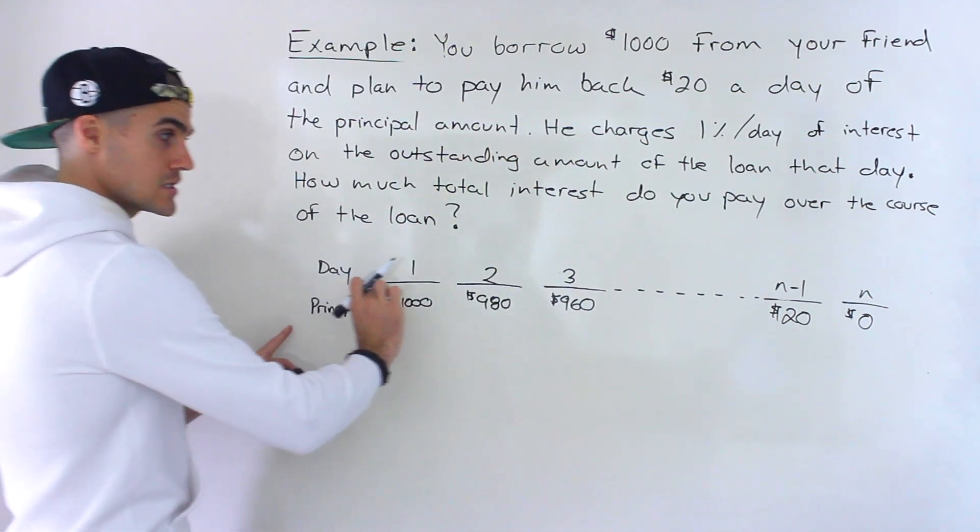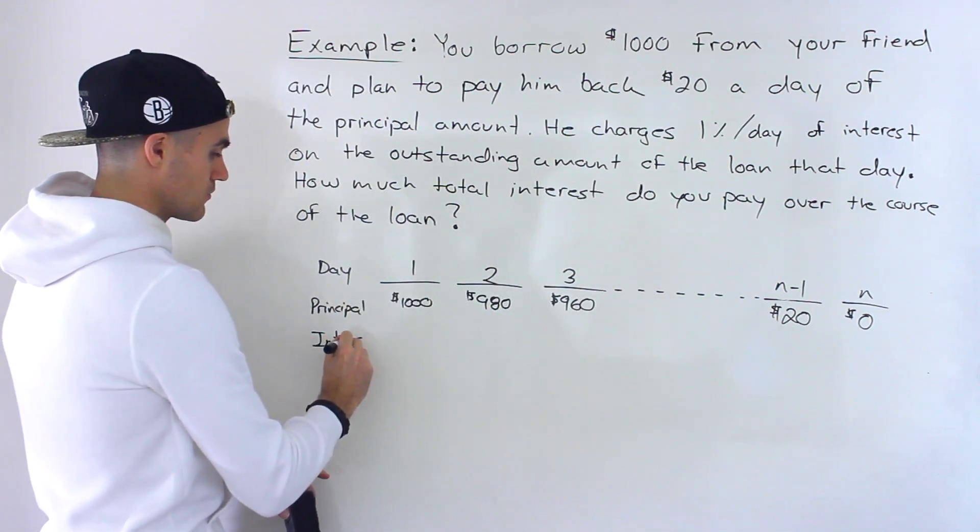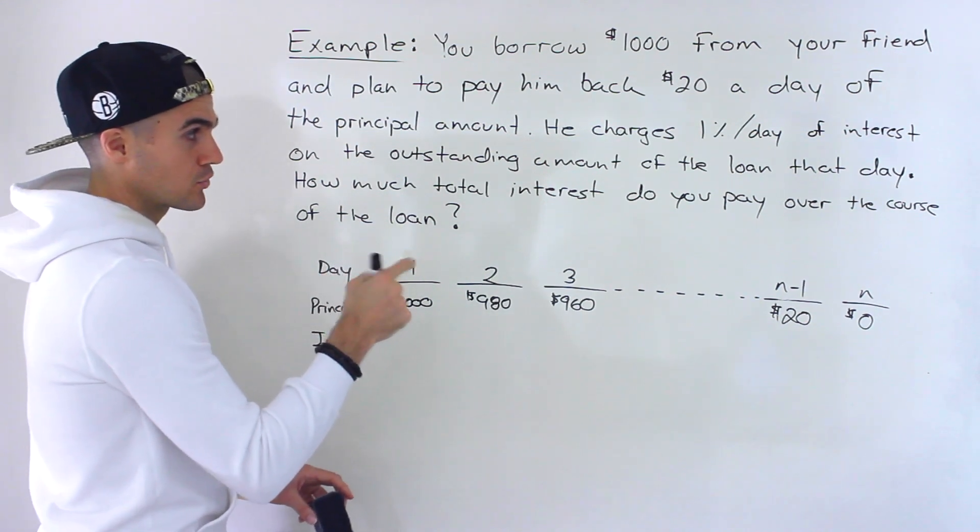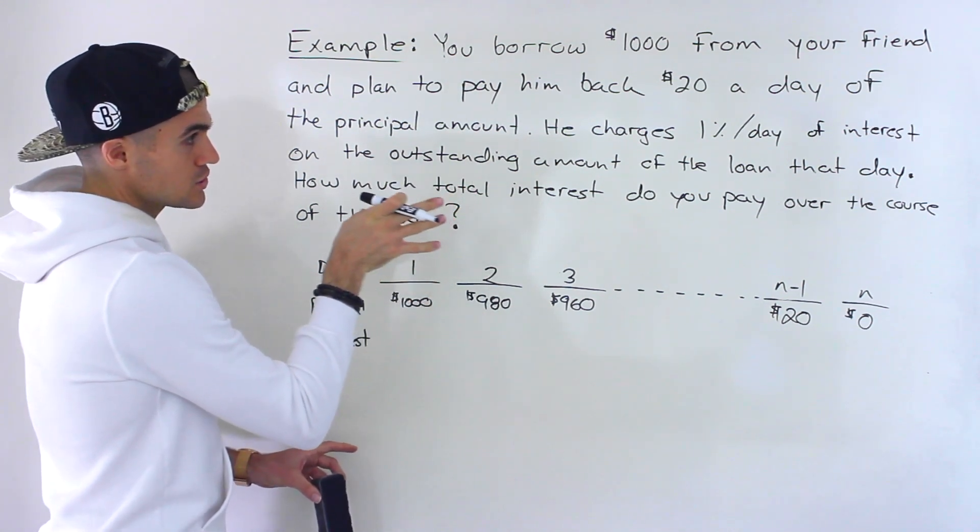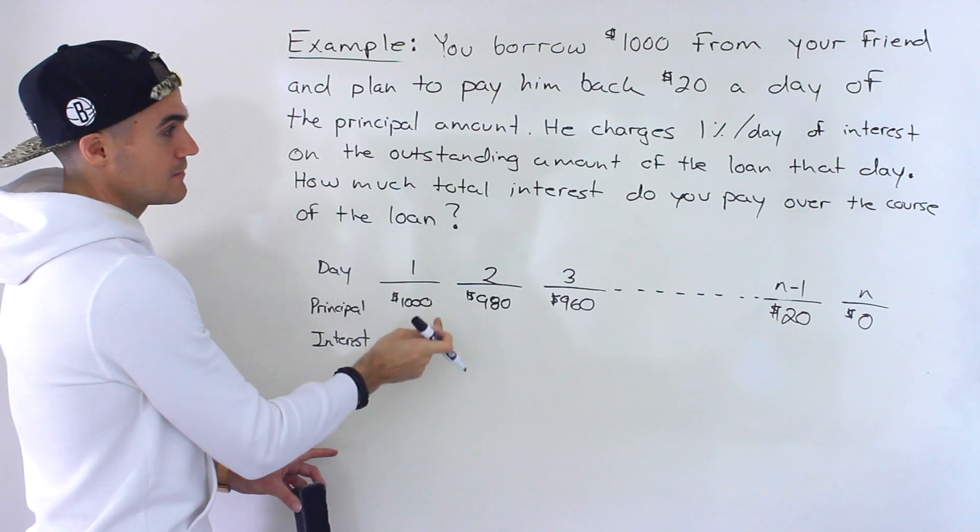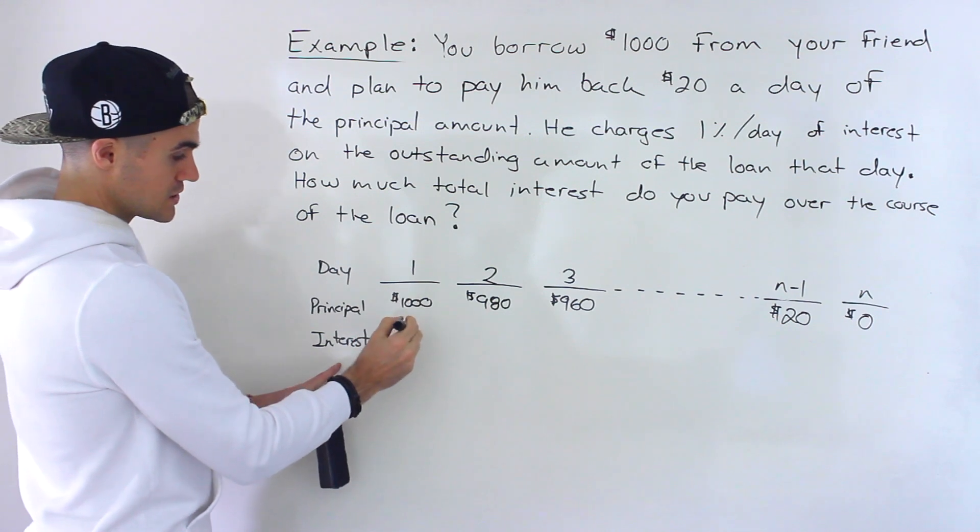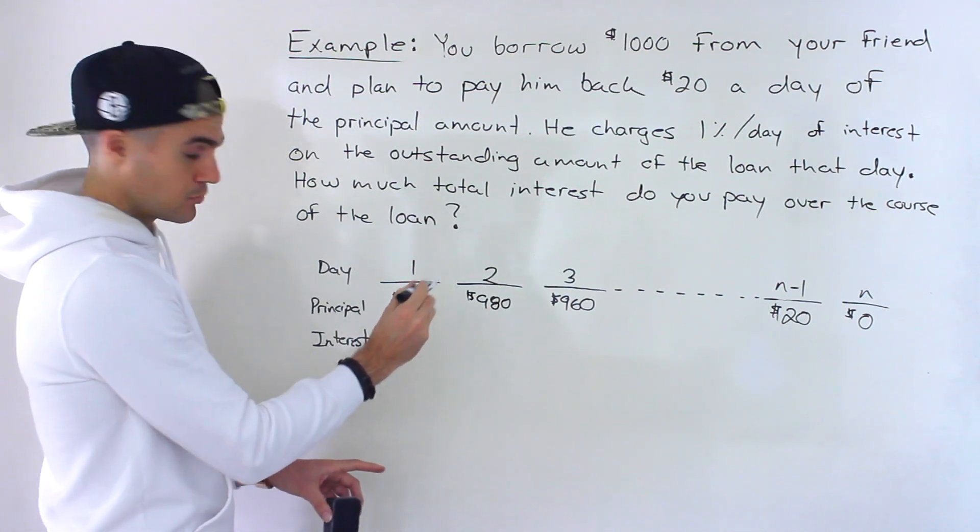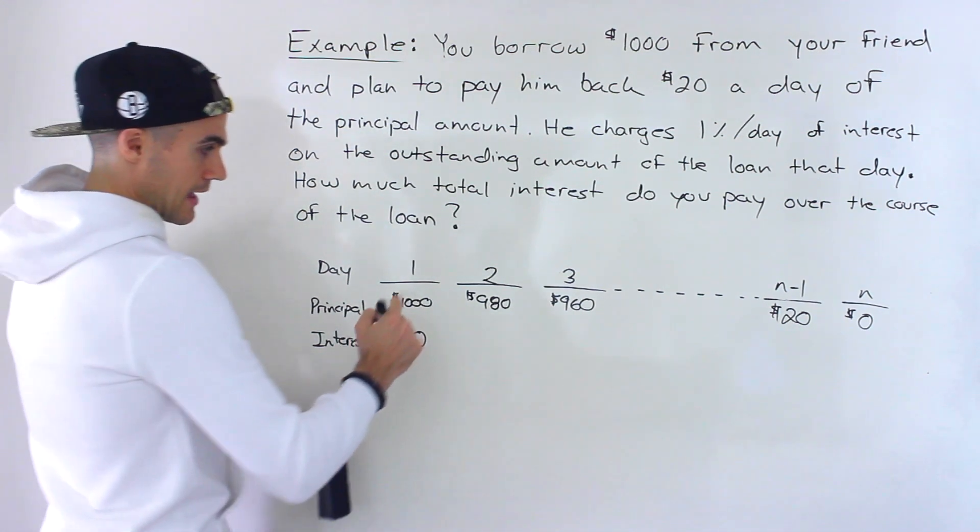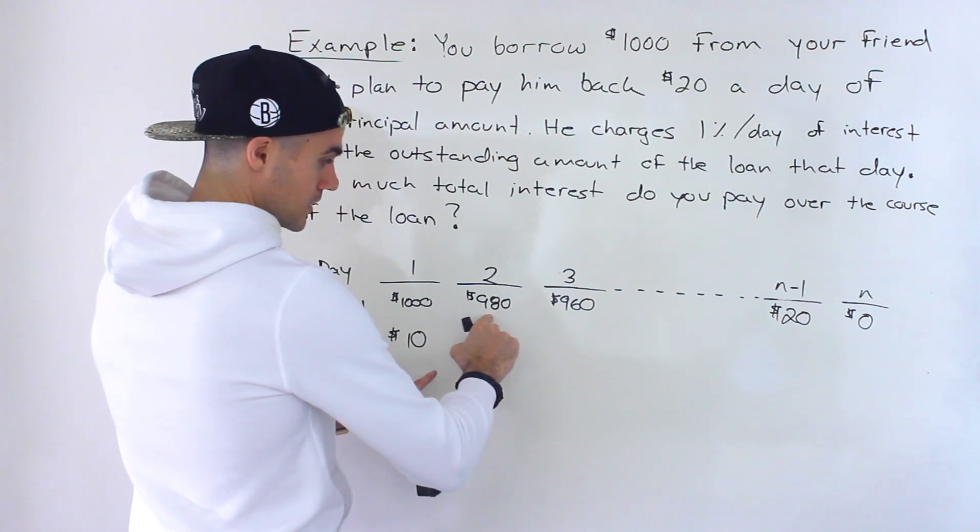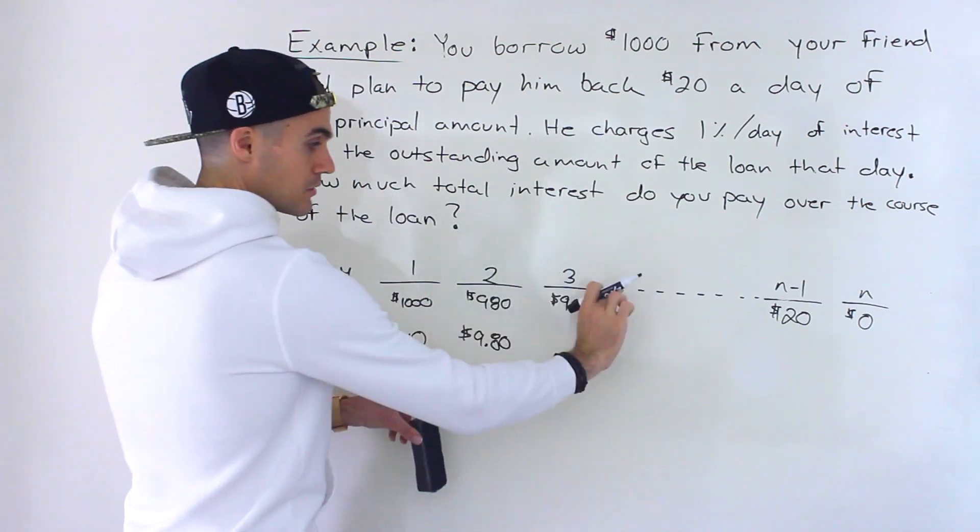So in addition to paying down the principal over here, you're also going to have to pay interest. And what he's charging you is 1% per day, which is a very high interest rate, by the way. But nevertheless, that's what he's charging you. So he's charging you 1% per day on the amount outstanding on these amounts over here. So the interest in the first day, 1% of 1,000, 0.01 times 1,000 would give you $10. And then 1% times 980 would be $9.80. So notice that that interest amount is going down because the principal amount is going down.